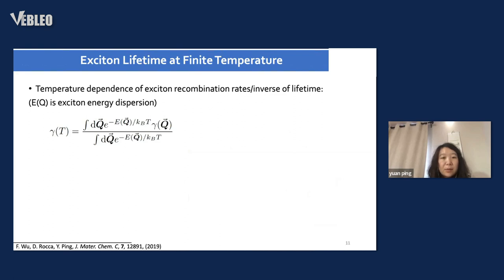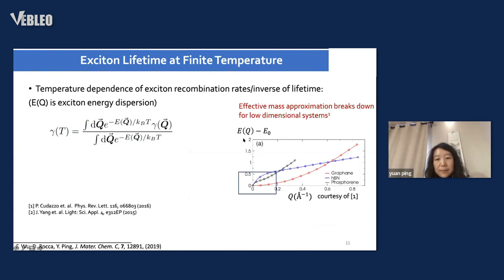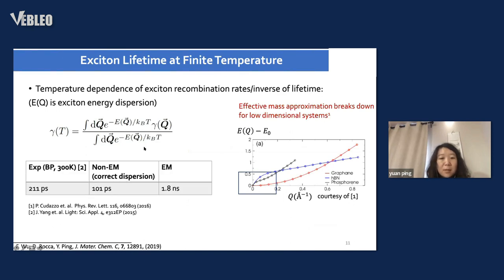To compare with experiment, we need finite temperature lifetime where you need thermal averaging of different exciton energies. Past work shows the exciton energy dispersion can be non-parabolic, which means the effective mass approximation may break down. You need to take into account accurate exciton dispersion from many-body perturbation theory to obtain exciton lifetime in much better agreement with experiment.